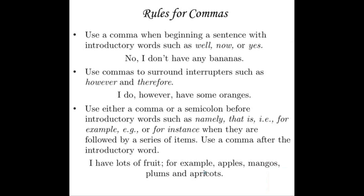Use a comma when beginning a sentence with introductory words such as well, now, or yes. For example: "No, I don't have any bananas." Also, use commas to surround interrupters such as however and therefore. For example: "I do, however, have some oranges" — we take a little tangent in the middle of the sentence and set the interrupter off with a pair of commas.